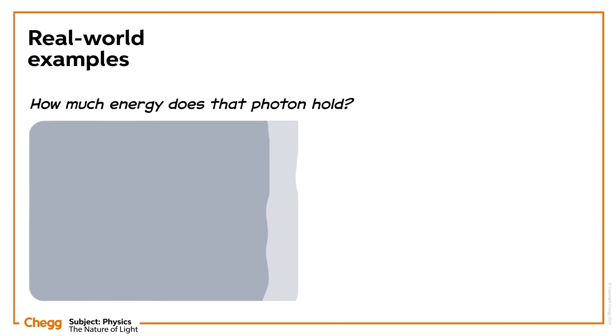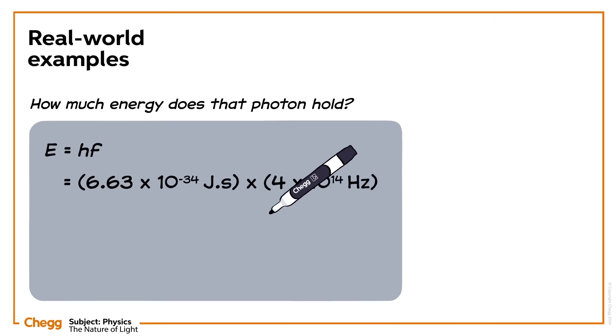So, say a photon in a light wave has a frequency of 4 times 10 to the 14 hertz. How much energy does that photon hold? To find the answer, simply plug the frequency along with Planck's constant into the formula, e equals hf. The photon has an energy of 2.7 times 10 to the power of minus 19 joules.